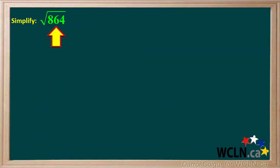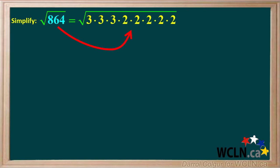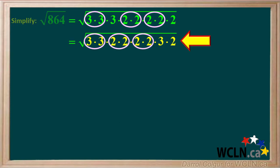Let's do another example. We're asked to find the square root of 864. If we keep factoring 864 until we get prime factors, we end up with 3 threes and 5 twos multiplied together. Looking for pairs, we can circle a pair of 3's, a pair of 2's, and another pair of 2's. We'll rearrange the numbers to put their pairs together and the leftover numbers on the right.